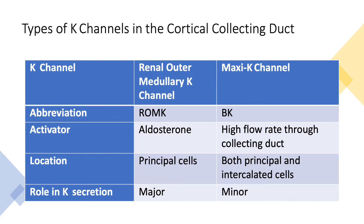In this lecture, let's talk about potassium channels in the cortical collecting duct. There are two types: the renal outer medullary potassium channel, which we call ROMK, and the maxi potassium channels, abbreviated as BK, which stands for big potassium. The ROMK channels are activated by aldosterone, while the maxi K or BK channels are activated by high flow rate through the collecting tubule. The higher the flow, the higher the potassium secretion.